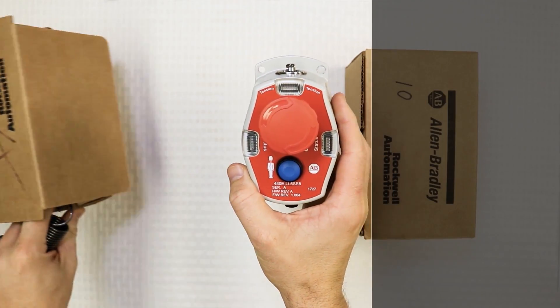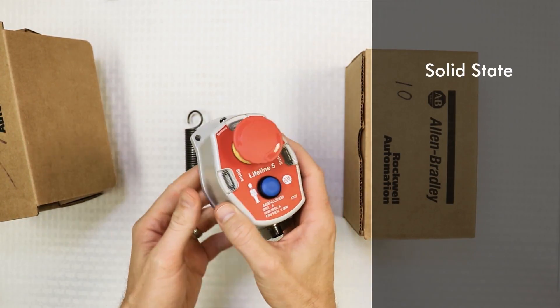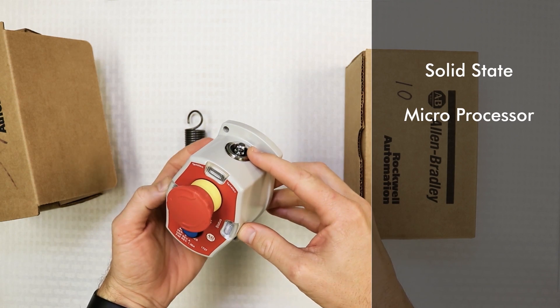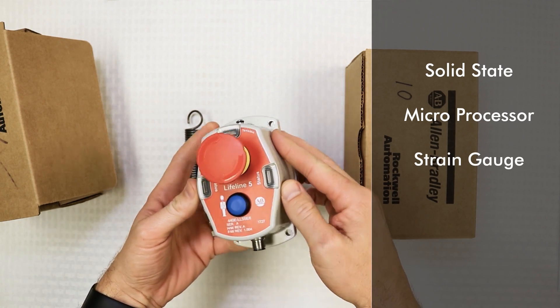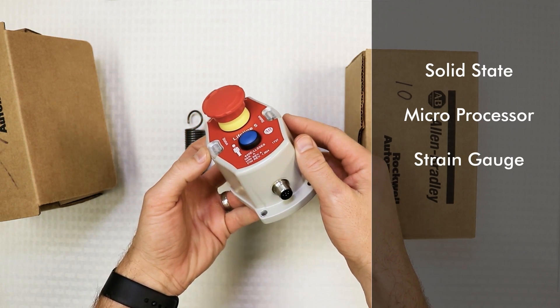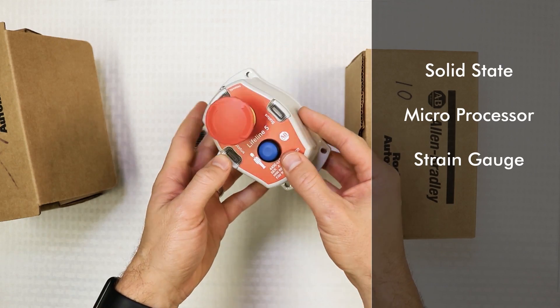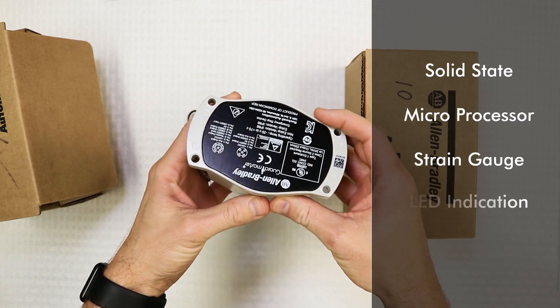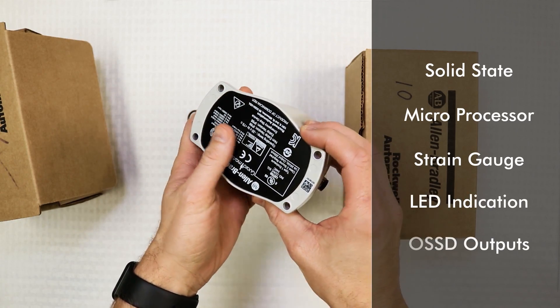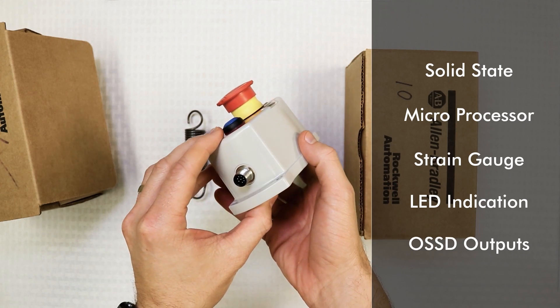The Lifeline 5 is all solid state, microprocessor based, strain gauge technology, completely sealed, over-molded PCB, rugged construction, LED indication, OSSD outputs with a wide operating temperature range.